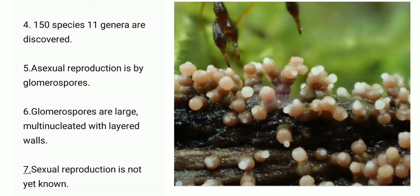Point 6: Glomerospores are large. They are multi-nucleated with layered walls. Point 7: Sexual reproduction is not yet known.